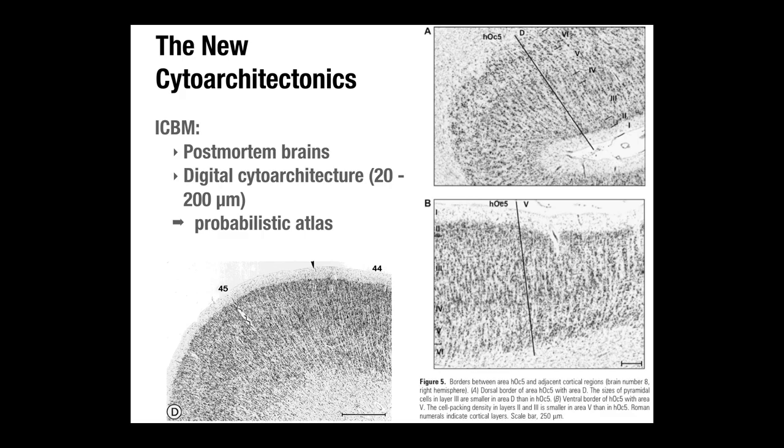The idea of the probabilistic atlas is to take all 12 individuals, map out Brodmann area 45, project onto structural MRI, do spatial normalization so all brains line up, and figure out how much overlap there actually is across individuals. The probabilistic atlas lets you click on a brain area and get a result like '95% likely to be Brodmann area 45, 5% likely to be Brodmann area 44,' with probabilities tapering off at fringe areas.